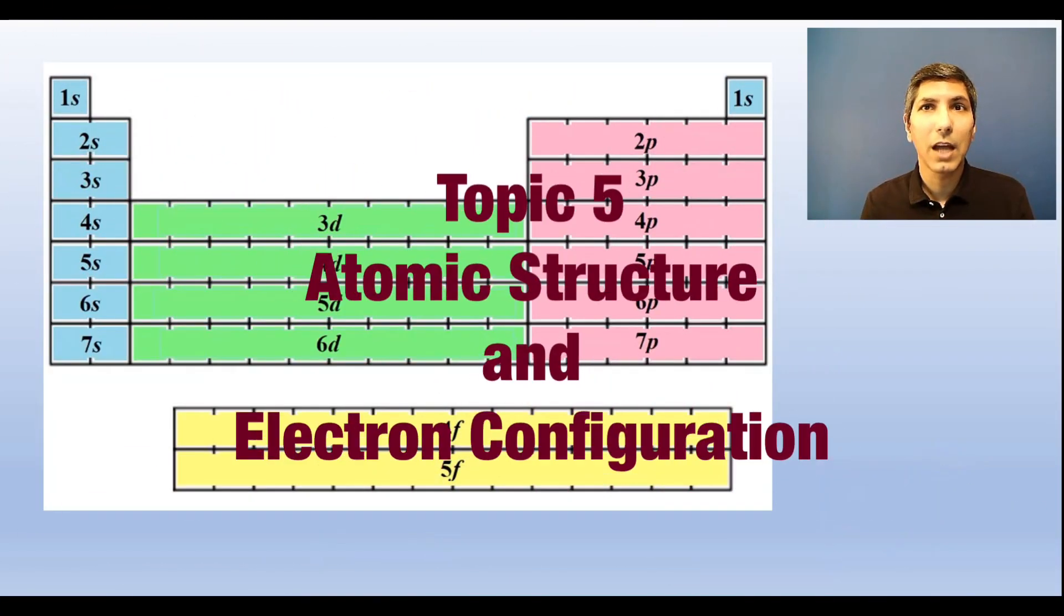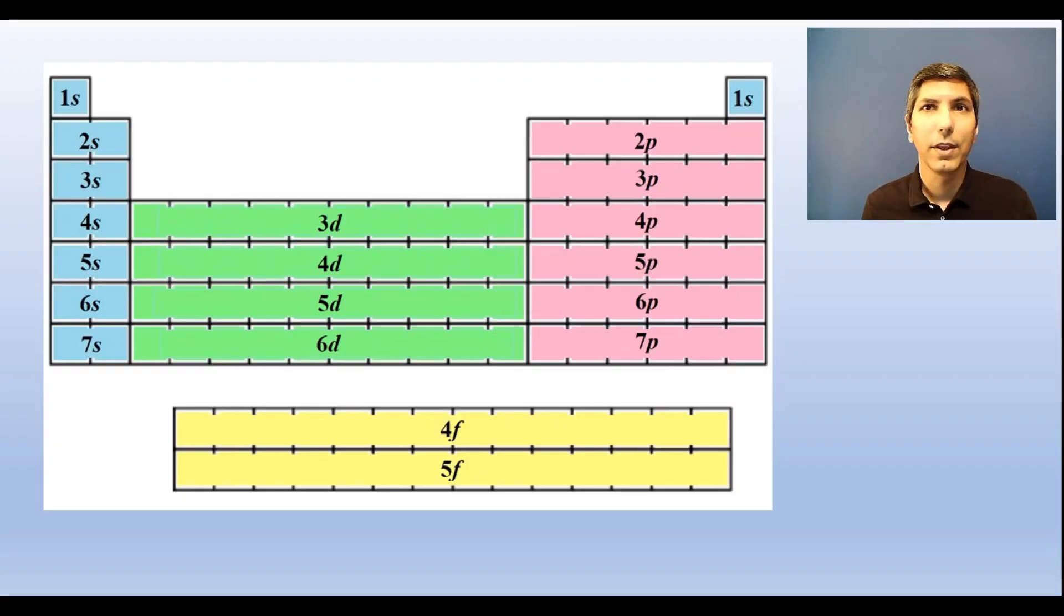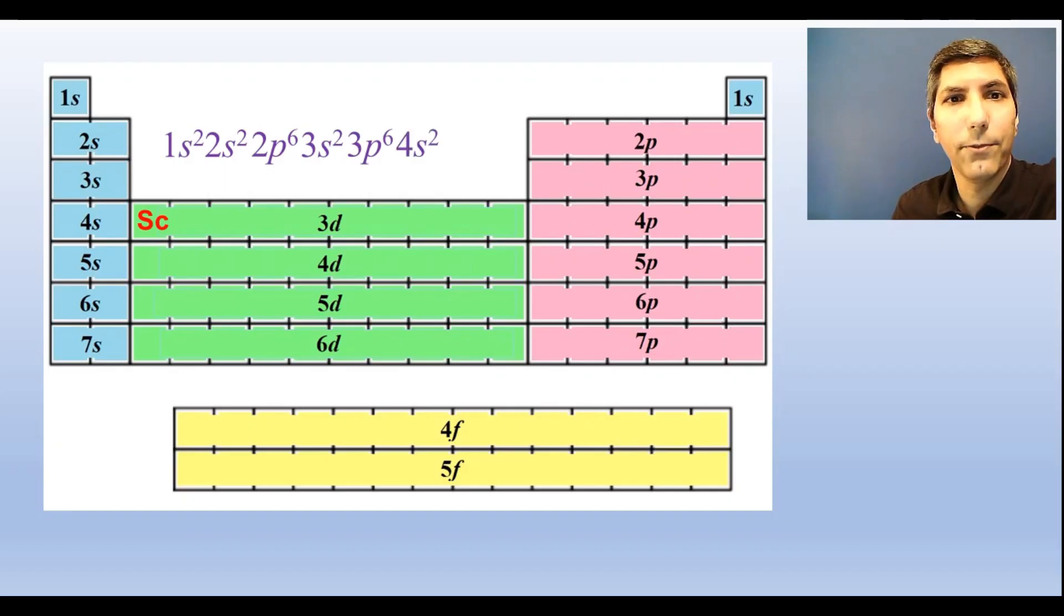One of the key skills in understanding atomic structure is being able to write electron configurations for the elements. For example, the electron configuration for scandium would be 1s2, 2s2, 2p6, 3s2, 3p6, 4s2, 3d1. You need to be very good at writing these. You also need to recognize that the electrons in the outermost energy level or shell are called valence electrons. In scandium, there are two circled here. The s, p, and d represent sublevels or subshells, and there are seven sublevels in scandium.